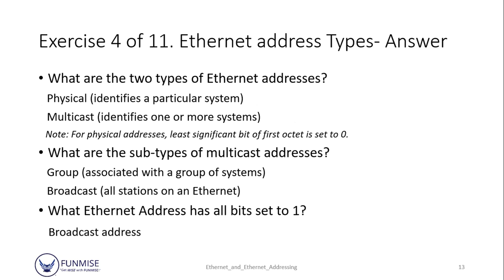The two types of Ethernet addresses are physical and multicast. Multicast applies to one or more systems, while physical addresses apply to a single system. There are some subtypes of multicast addresses: the broadcast multicast address, which means all stations on an Ethernet, and the group type of multicast address, which refers to a group of systems. The broadcast address is the Ethernet address that has all bits set to one.